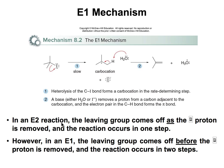In an E2 reaction, the leaving group leaves and the beta proton is removed at the same time. But in an E1, the leaving group leaves first, and then the beta proton is removed.